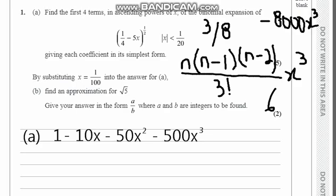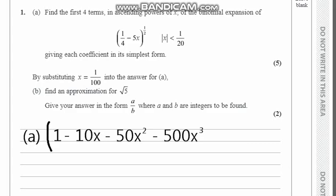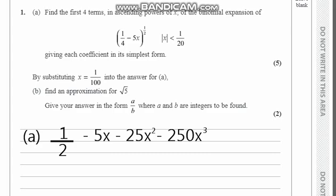Now our four terms have been done. But remember that we took the factor 1/4 outside and then took that power to one-half, which gave us a half. So we'll multiply everything with a half. That will be our final product, giving each coefficient in simplest form. That's our final product: one-half minus 5x minus 25x squared minus 250x cubed. You can just add a small positive sign to show that this binomial expansion is never-ending because there are a lot of functions to be expanded here. Five marks down.